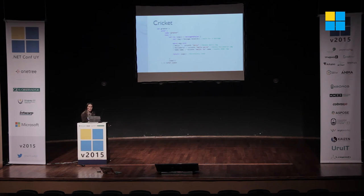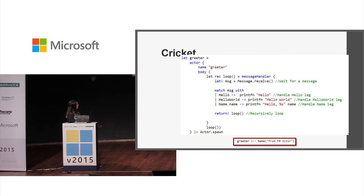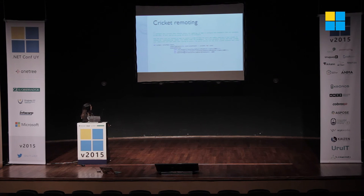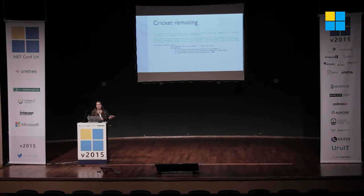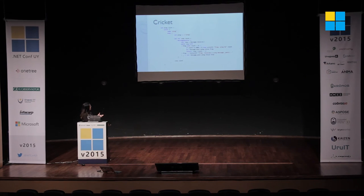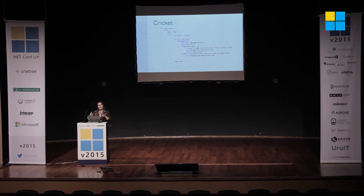The Crickit library is how you would create a standard actor — in this case they're actually called actors but it's the same asynchronous workflow. We have a name and then what the actor itself looks like: a recursive handler, a recursive loop, and a message handler. We wait to receive a message, do something with it, then return and loop through again. Actor.spawn in Crickit is their way of saying actor.start. You send information with the greeter and a back-arrow. For remoting, you enable remoting, set up a few things, and start everything. An actor with remoting enabled looks exactly the same: you still have your actor, name, body, recursive loop, message handler, receive, handle the message, and loop again.